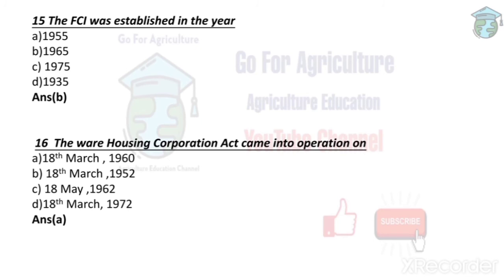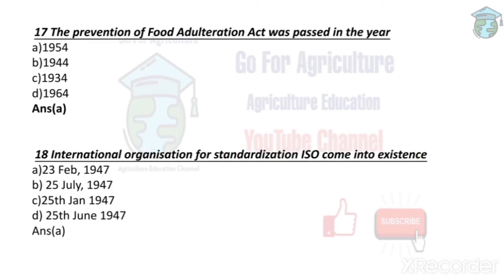The Warehousing Corporation Act came into operation on 18th March 1960. The Warehousing Corporation Act is related to storing agricultural commodities in warehouses. After farmers produce the product, it is stored in warehouses. Next, the Prevention of Food Adulteration Act was passed in the year 1954.